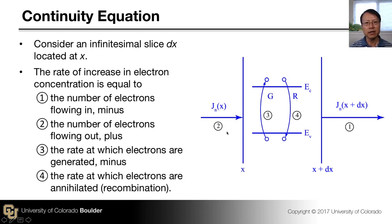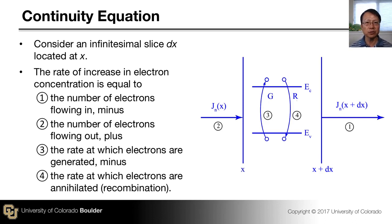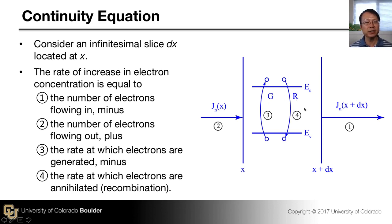That outgoing flux tends to reduce the carrier concentration. Additionally, there can be generation and recombination within this volume. Generation could be due to light illumination or light absorption, and recombination includes multiple mechanisms discussed in previous videos.